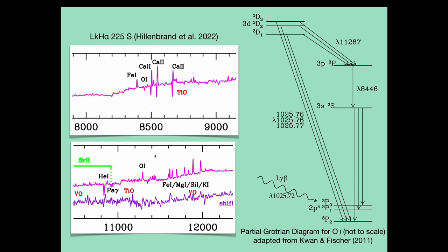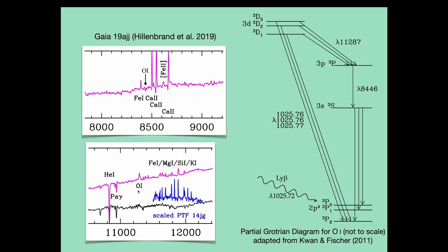However, this is not always the case for EXOR stars. For LkH-alpha 225 South, the 11287 Å line is in emission but the 8446 Å line is in absorption. Similarly, for Gaia 19ajj, the 11287 Å line is in emission but the 8446 Å line is in absorption. Quan and Fischer note that absorption at 8446 Å may occur if there is a population buildup in the lower energy level of this transition — the 3s triplet S state — facilitated by radiative trapping of the ultraviolet 1303 Å photons. Thus, the absorption seen in LkH-alpha 225 South and Gaia 19ajj may suggest that the emitting gas is optically thicker in the ultraviolet, indicating another structural difference compared to V1741 Sagittarius.